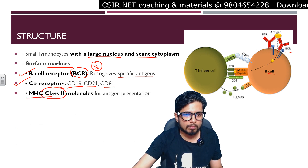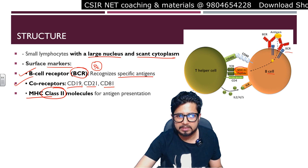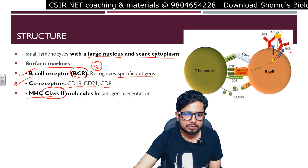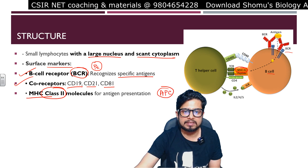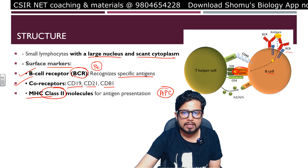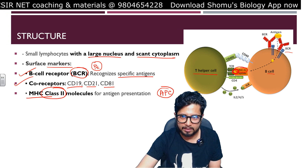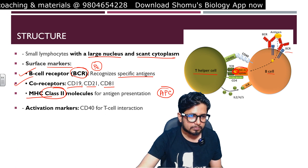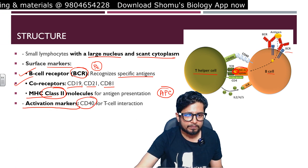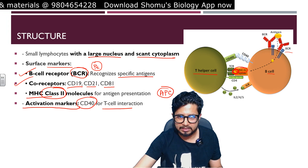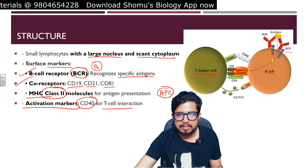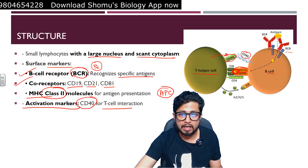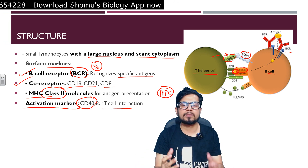B cells also have MHC class 2 molecules for processing and presenting antigens. Any cell in our body having class 2 MHC molecules is known as a professional antigen-presenting cell, because they can showcase antigens — shown here in yellow — to other immune system cells, such as T helper cells. B cells also have activation markers like CD40 for T cell interaction, which interacts with the CD40 ligand displayed by T helper cells.